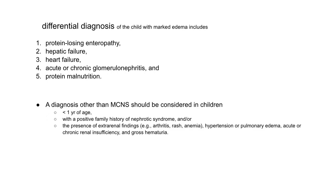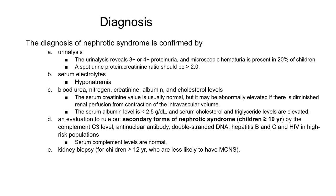Differential diagnosis of a child with marked edema includes protein-losing enteropathy, hepatic failure, heart failure, acute or chronic glomerulonephritis, and protein malnutrition. Laboratory findings favoring diagnosis of nephrotic syndrome include 3+ or 4+ proteinuria with a spot urine protein-creatinine ratio of more than 2, electrolyte imbalance such as hyponatremia, normal to elevated serum creatinine, hypoalbuminemia less than 2.5 g/dL, and elevated serum cholesterol and triglycerides. Secondary forms are evaluated by C3 complement level, antinuclear antibodies, anti-double-stranded DNA antibodies, and hepatitis B, C, and HIV serology.